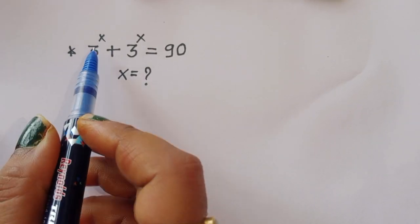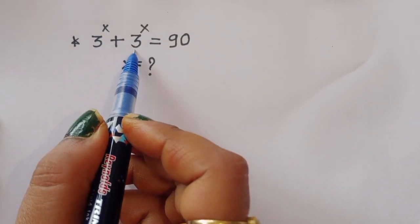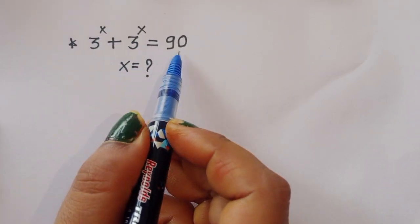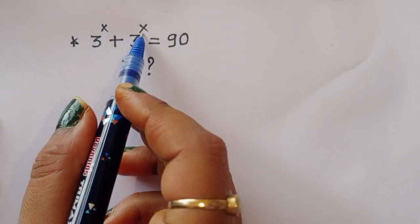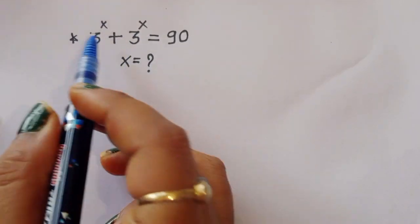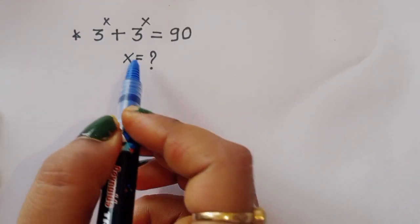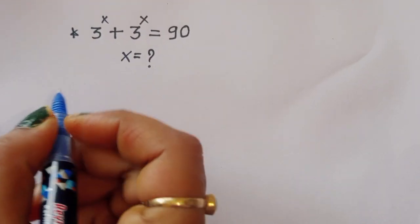The question is: given 3 power x plus 3 power x is equal to 90. We have to find out the value of x here. How can we find out the value of x? Let's see the solution.